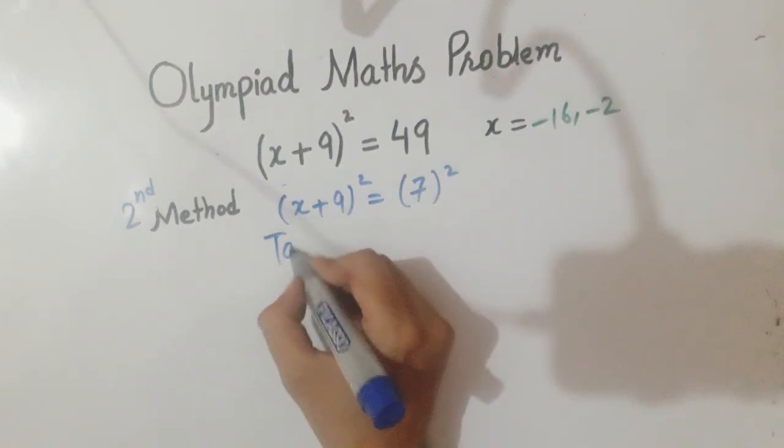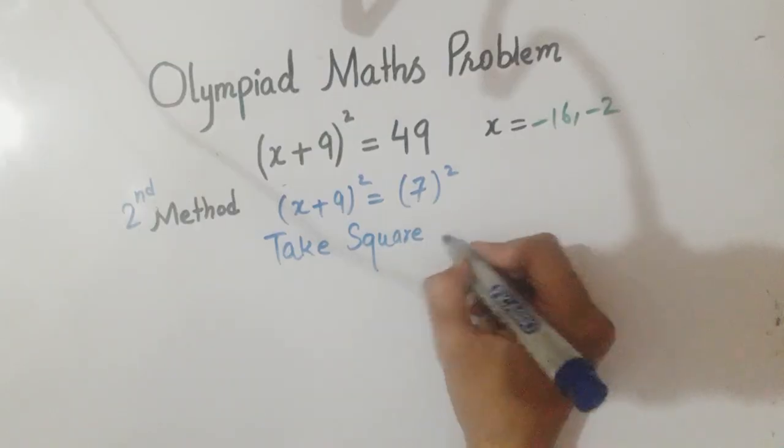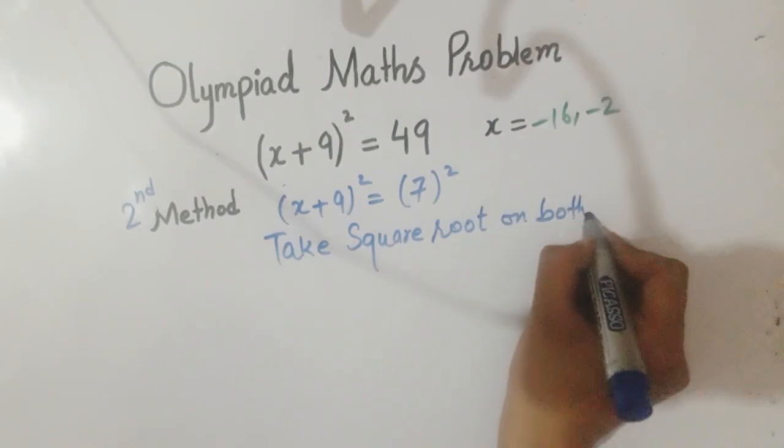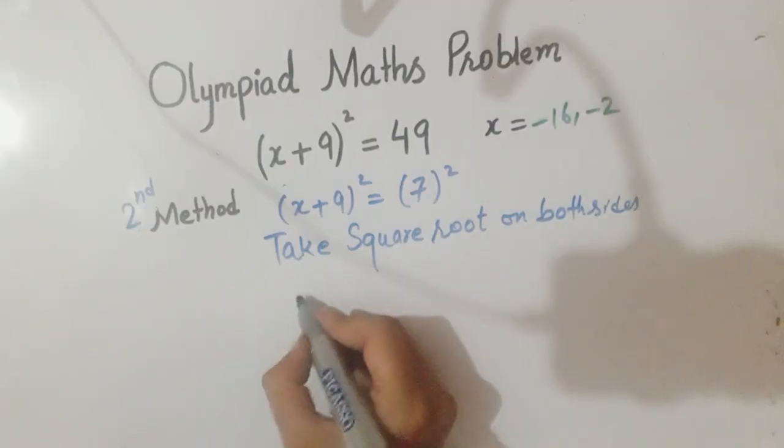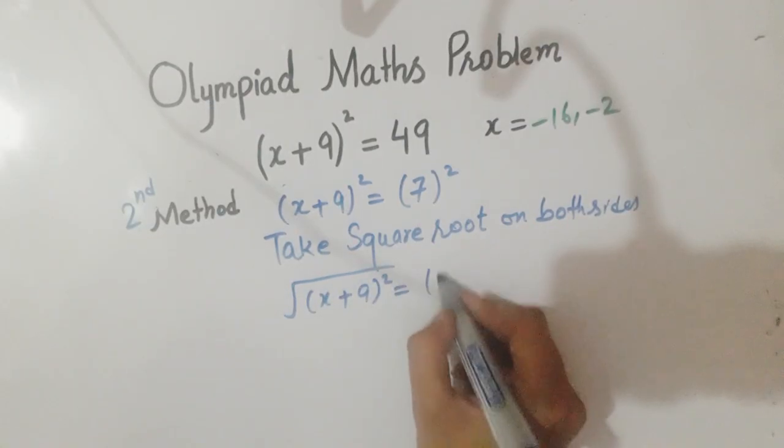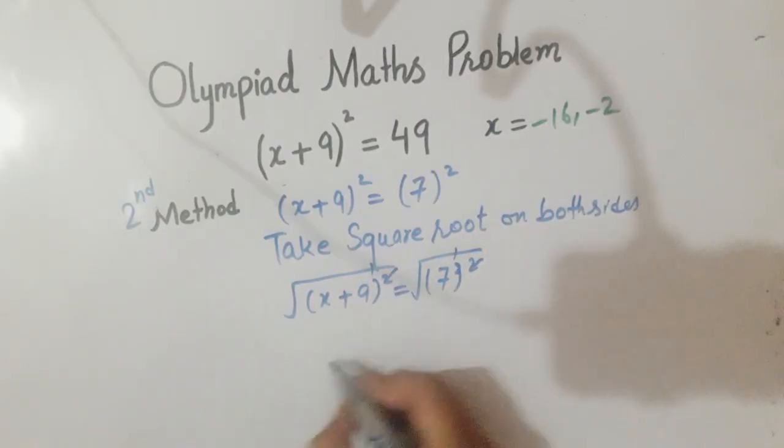Now take the square root on both sides. So the square is cancelled out and we get x + 9 = 7.